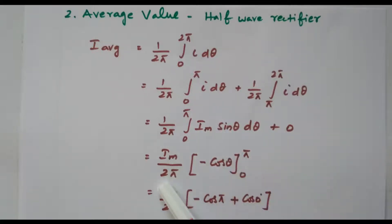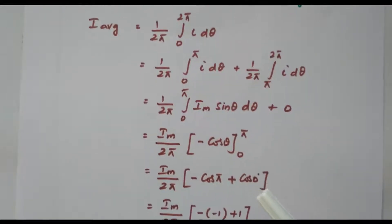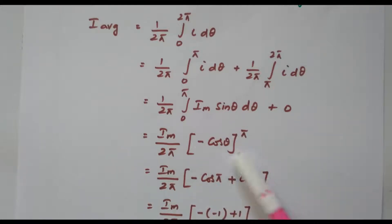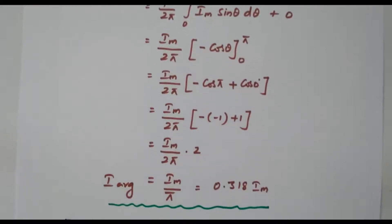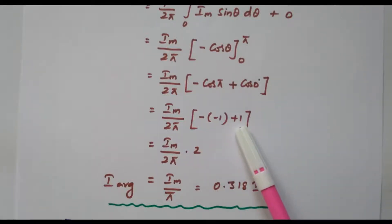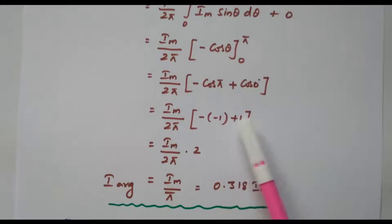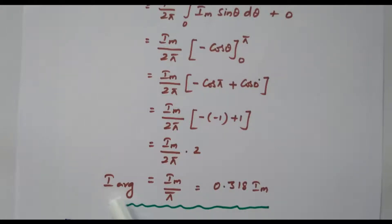So we have (1/2π) ∫₀π Im·sinθ dθ. Taking Im outside gives Im/2π. The integral of sinθ is −cosθ. Substituting the limits 0 to π: Im/2π × [−cosπ + cos0]. Since cosπ = −1, −(−1) = +1, and cos0 = 1, we get 1 + 1 = 2. So Im/2π × 2 — the 2 cancels — giving Im/π = 0.318·Im. The average value of the half wave rectifier is 0.318·Im.